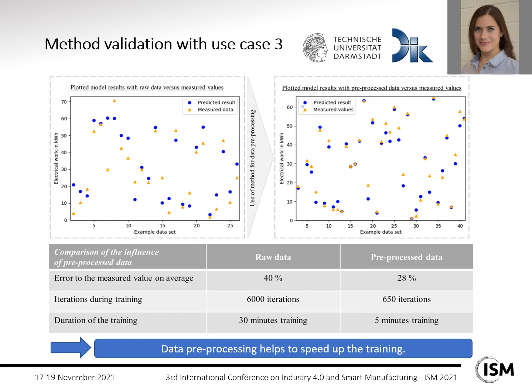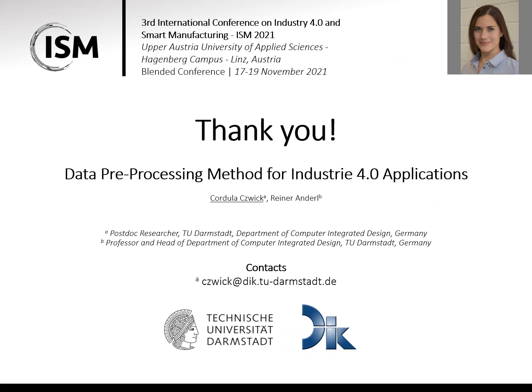We can also see different iteration counts during training: 6,000 iterations for raw data compared to 650 for pre-processed data. We need significantly more training time with raw data compared to pre-processed data. So data pre-processing helps to speed up training. This short example shows how the method can help, but there are more steps to do and a larger validation to perform. Thank you.